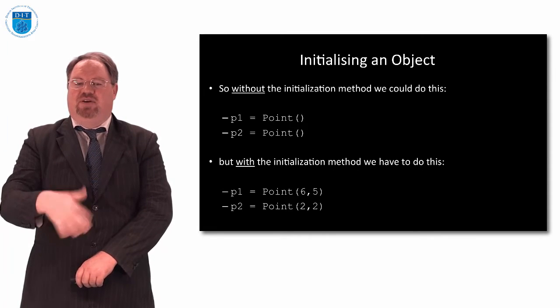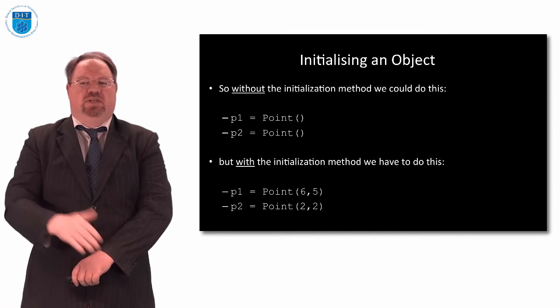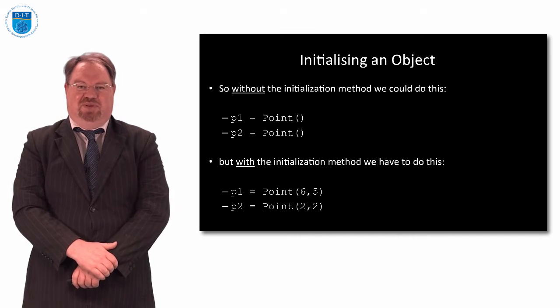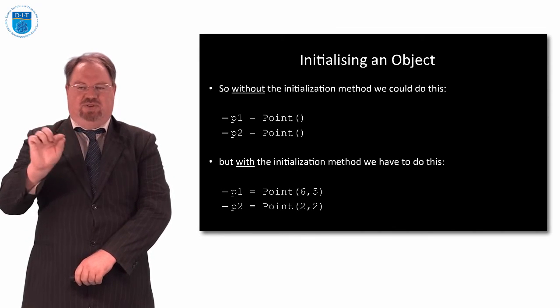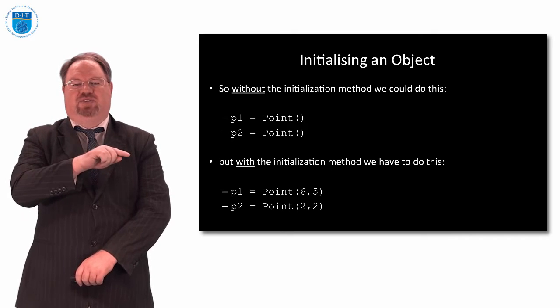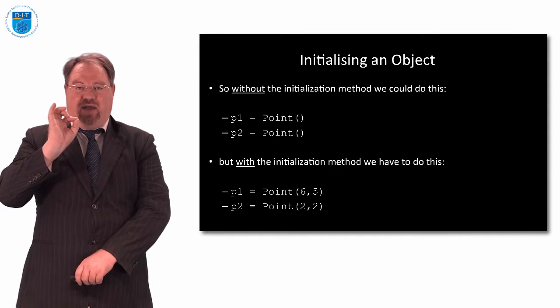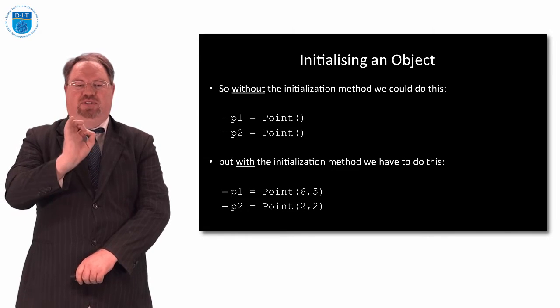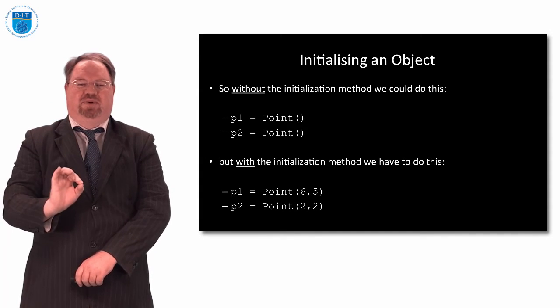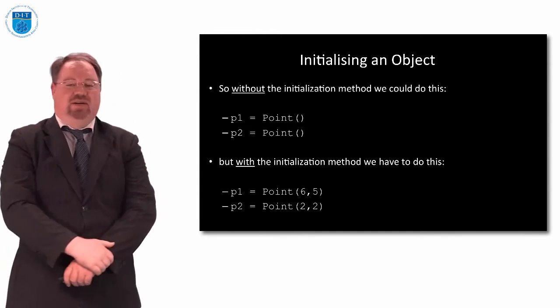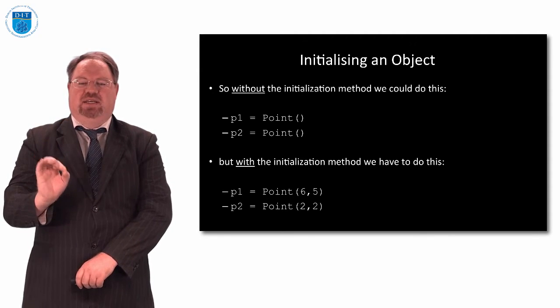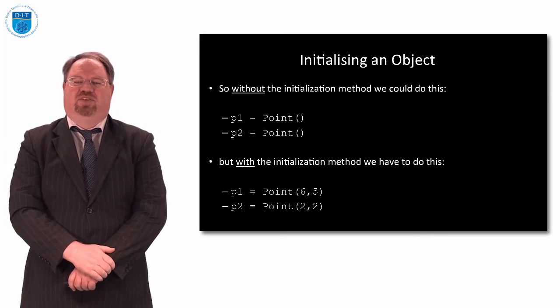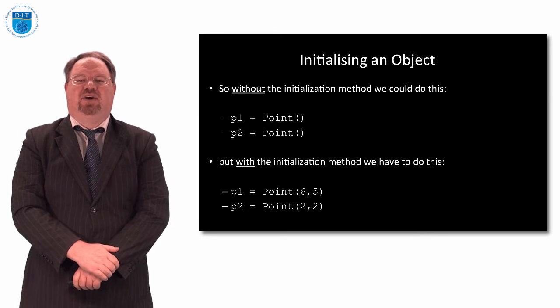So all the initialization method says is put values into all the attributes before we start. Because if you don't declare them and put values in them, somebody might be using it and it could explode and blow up or something like that. So with that __init__, when we declare an object of class point, we must put values into the point. So you can see on the top without, we could just do open bracket, close bracket. But with this init thing, we have to put in values for x and y for every point we create. Or the computer will sprout legs, sprout an arm, punch us in the face and say stop doing that, which is great because I think otherwise programmers would lose the run of themselves a bit.